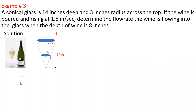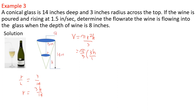For the conical volume problem: R over H equals 3 over 14, so R equals 3H over 14. The volume equals pi R squared H over 3, which equals pi over 3 times (3H over 14) squared times H, which simplifies to pi times 9H cubed over 3 times 14 squared.